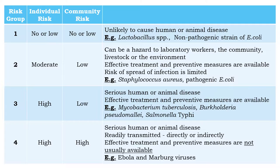Risk group 3 organisms have a high risk to the individual and a low risk to the community. However, they can cause serious human or animal disease, and effective treatment and preventive measures are available. Examples include Mycobacterium tuberculosis, Burkholderia pseudomallei, and Salmonella typhi. Risk group 4 organisms have high individual and community risk; they can cause serious human or animal disease which may be readily transmitted directly or indirectly, and effective treatment or preventive measures are not usually available. Examples are Ebola and Marburg viruses.